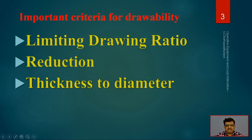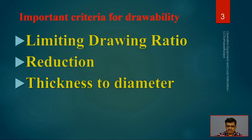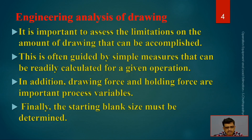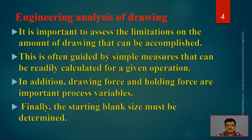What are the important criteria for deep drawability? The first criteria is the limiting drawing ratio — any ratio cannot be done. We have to find out what the limiting drawing ratio is, then the reduction, and the thickness-to-diameter ratio. These three criteria have to be analyzed before assessing the feasibility of the deep drawing operation. It is important to assess the limitations on the amount of drawing that can be accomplished, as there is a physical limitation — any form of drawing is not possible.